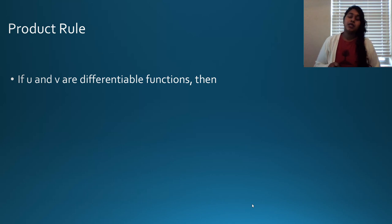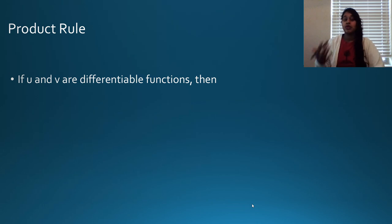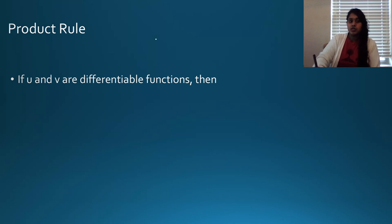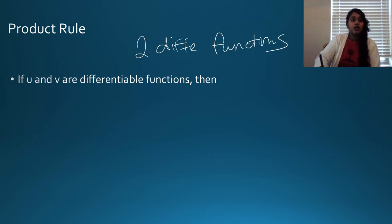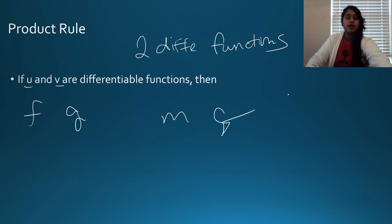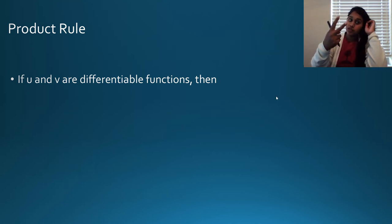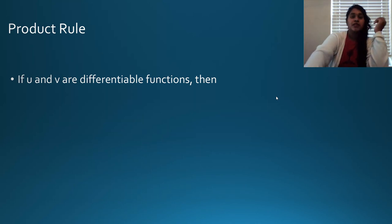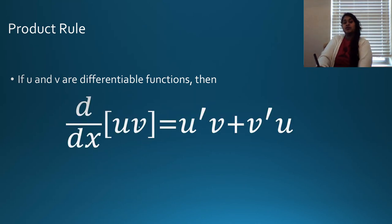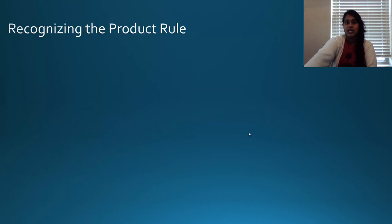The basic thing we're going to be talking about today is the product rule. I'm going to spend a lot of time explaining this because when we get to 2.7 and 2.8, I'm going to go through it very quickly. So if u and v are differentiable functions — this literally just means do I have two different functions — we can call those u, v, or f, g, or m, q. It doesn't matter what letters you use as long as you know they are two different functions and that they are differentiable. Then we can use this equation: the derivative of u times v equals u prime v plus v prime u.